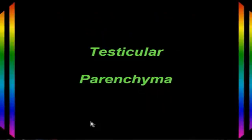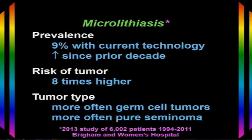Besides looking at masses inside the testicle, we look at the testicular parenchyma for other reasons, including microlithiasis. Microlithiasis are tiny little calcifications scattered throughout the testicular parenchyma. The prevalence is about 9% with current ultrasound technology, and this prevalence has increased since a decade ago because our ultrasound transducers have improved.